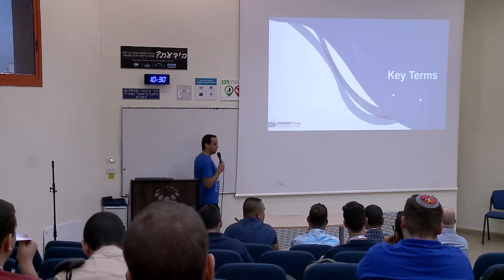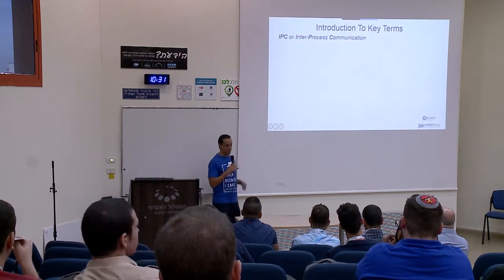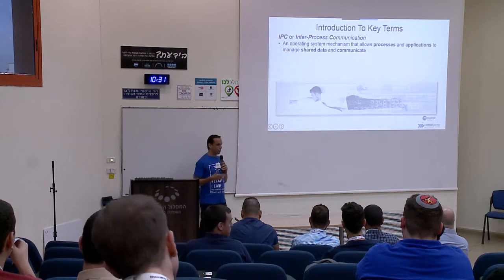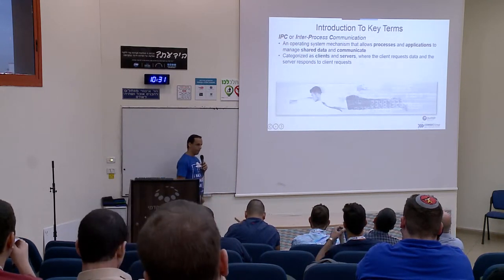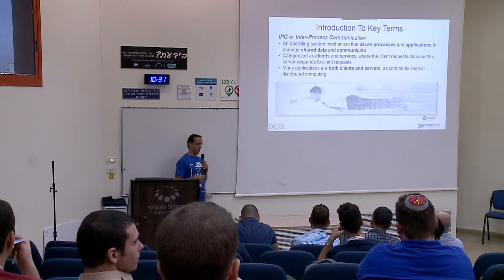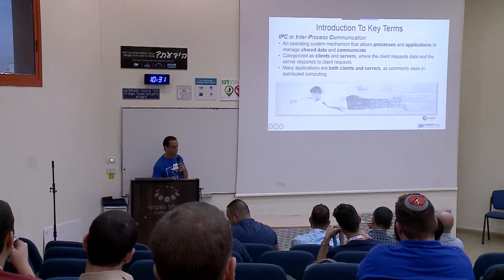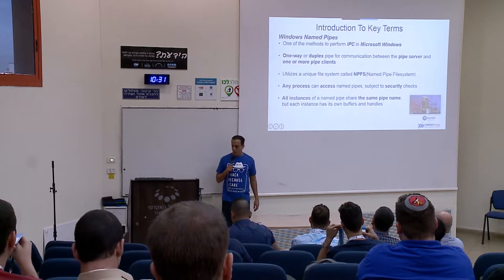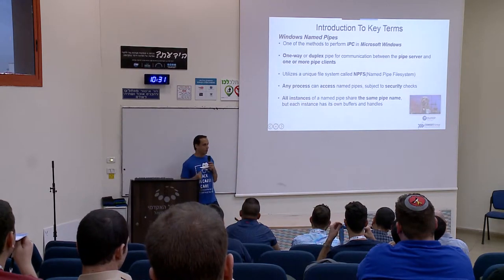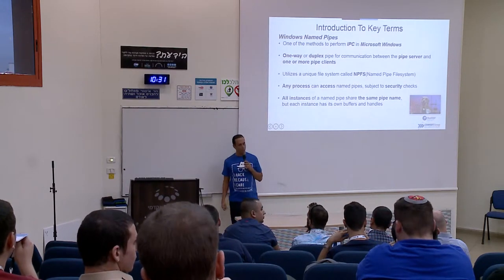Let's begin with some key terms. Let's start with inter-process communication, or IPC. Inter-process communication is a technique that allows multiple processes and applications to share data with each other and communicate. There are clients and servers, and each application can act as both client and server at the same time. The server listens, the client connects to it and sends information — very similar to a web-based architecture. Windows named pipes is a form of inter-process communication — this is the Microsoft implementation of IPC, and it allows you to connect between applications.